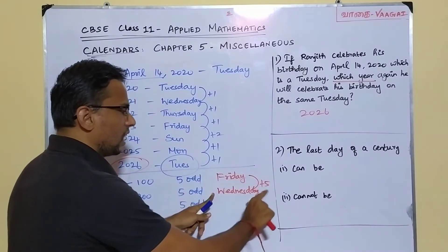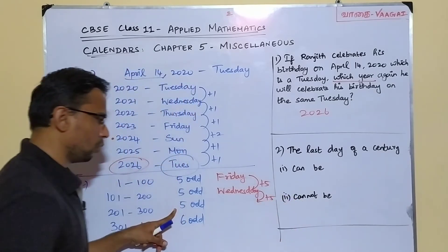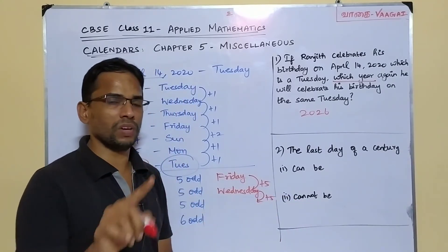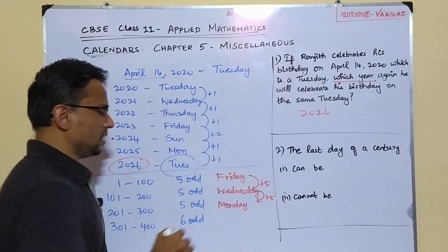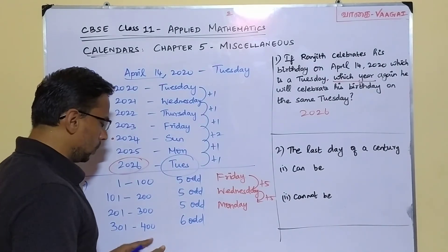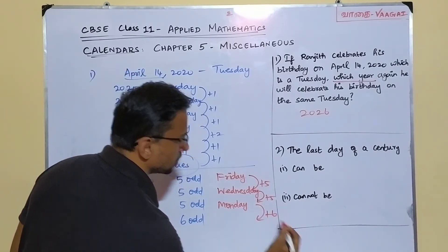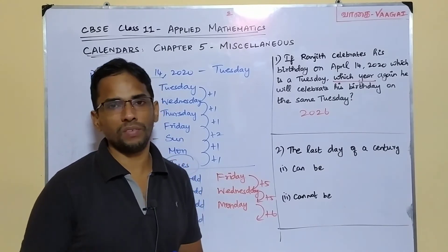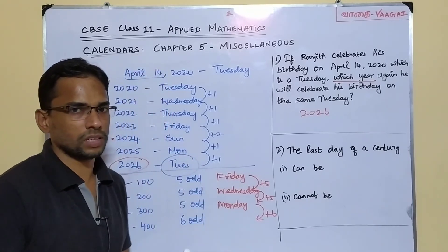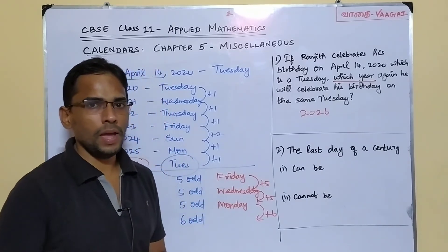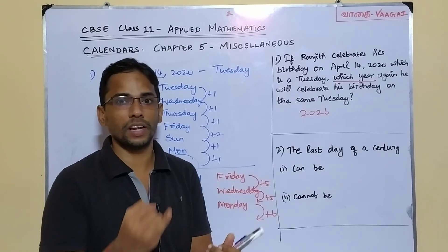For the fourth century, we have 6 odd days. Starting from Monday, we add 6: Tuesday, Wednesday, Thursday, Friday, Saturday, Sunday. The last day of the fourth century is Sunday. So the four possible last days of a century are: Friday, Wednesday, Monday, and Sunday.